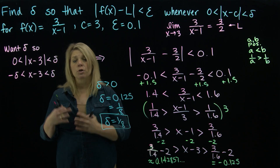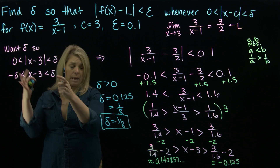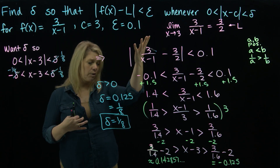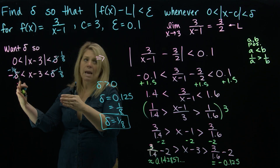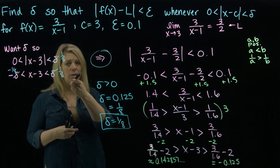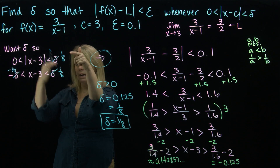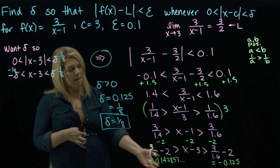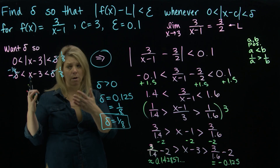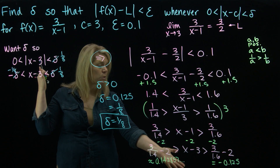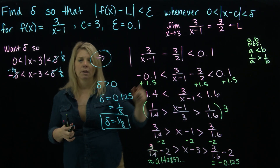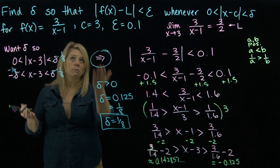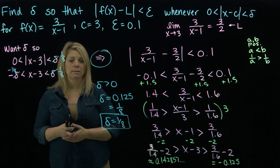If I wanted to actually show that delta = 1/8 works, I would plug it in and reverse the steps to show that this delta produces the required epsilon inequality. The implication in the definition goes this direction, so the scratch work is like working a puzzle backwards. For the way this question is worded, finding the delta value is all you need to do.